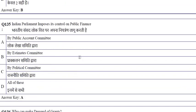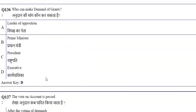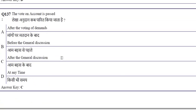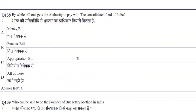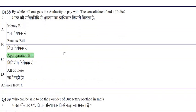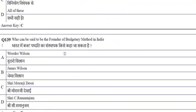The Indian Parliament exercises control on public finance through the Public Accounts Committee. The executive can make demands for grants. The vote on account is passed after the general discussion. Through the Appropriation Bill, one gets authority to draw from the Consolidated Fund of India — please remember this important question.